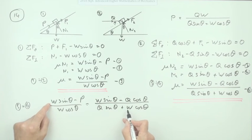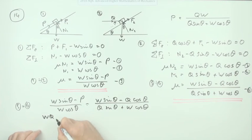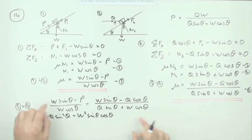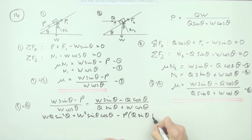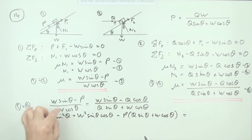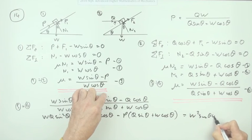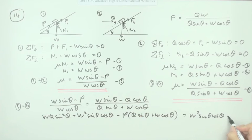So taking this across and multiplying the top W times this, I'll have WQ sin² θ plus W² sin θ cos θ, that's just this multiplying that part. Then I'll be minus P times, I'll just put it in a bracket, Q sin θ plus W cos θ, because I just want P in its own, equals taking that across W² sin θ cos θ.